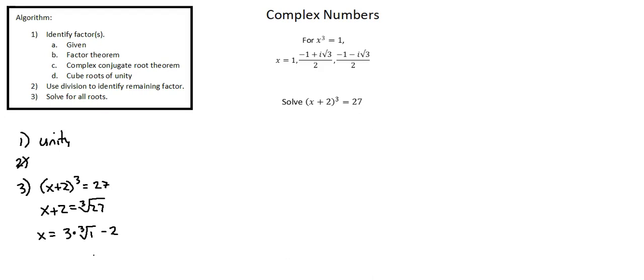The importance of the cube root of 1 is the connection to the cube roots of unity. Going to the equation at the top of the screen, x cubed equals 1 means that x equals the cube root of 1, which produces three solutions. We want to connect those three solutions to our equation. So we have x equals 3 times something minus 2, a second solution, 3 times something minus 2, and a third solution, 3 times something minus 2.